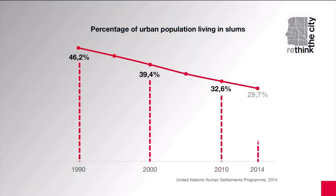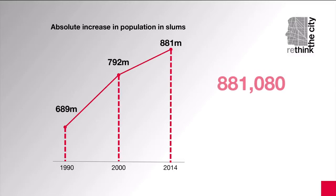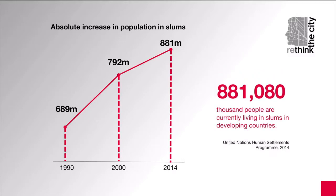Housing and urban policies and programs have heavily focused on slums upgrading and urban poverty reduction. The good news is that the percentage of urban population living in slums in the Global South has decreased from 46% in 1990 to 30% in 2014. However, if we take into account the trend towards the increase in urban population across the Global South, we see that in absolute terms the number of people living in slums has grown almost 25% over the same period.